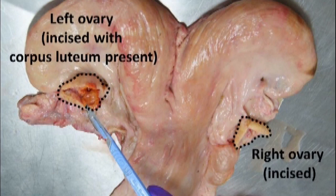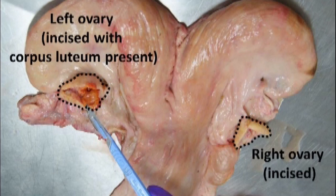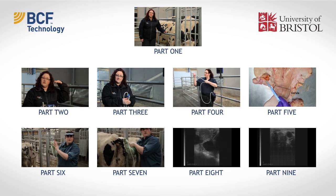The left and right ovaries are located in the region of the tip of each uterine horn. On this particular photo, the left ovary has been incised and there is the presence of a corpus luteum, and the right ovary has also been incised.